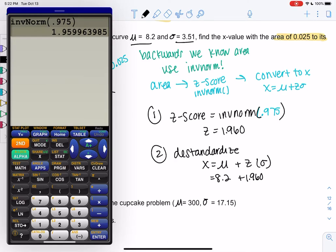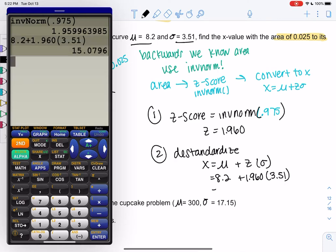So mu plus z times sigma. So mu was 8.2, plus 1.960 times 3.51. We can just type that all at once. And we get 15.0796. And so that would be considered an x value. The next example will make more sense because we'll have real data.